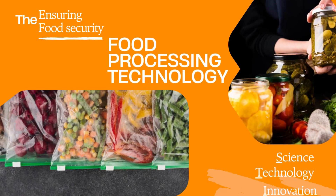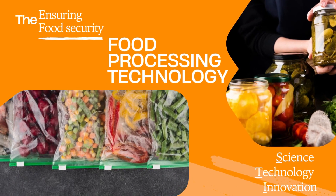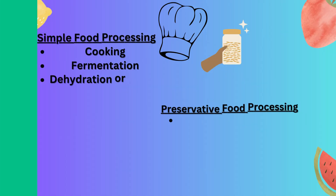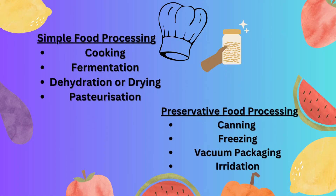Next, we will start with food processing technology. Simple food processing techniques include cooking, fermentation, and pasteurization. Moving on are preservative food processing methods such as canning, freezing, vacuum packaging, and irradiation.